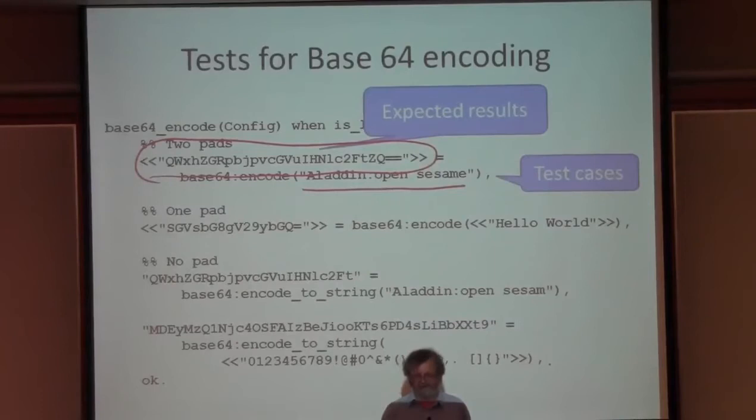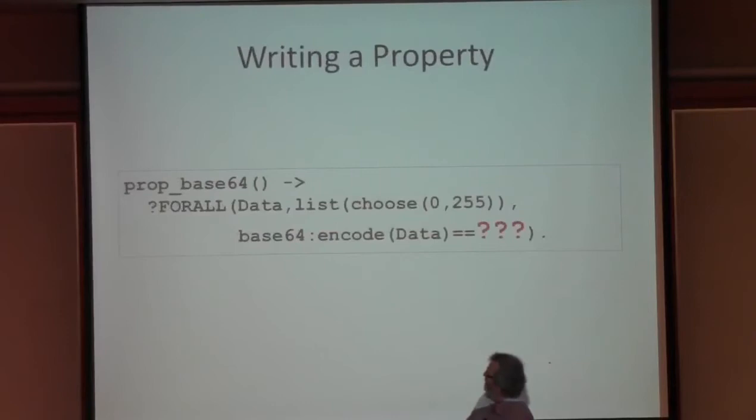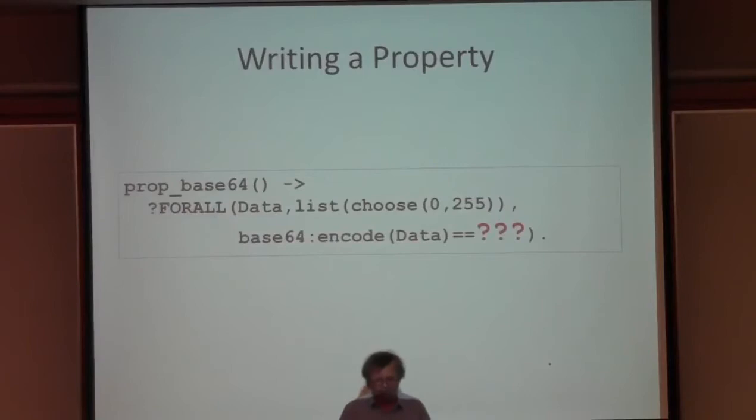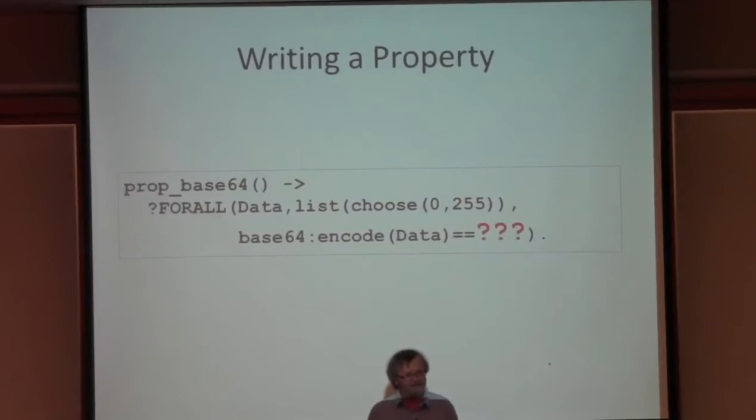Here you can see four test cases: each one encodes a fixed string and checks that the result equals an expected binary string - showing the characters that the base64 encoding produces. Those are the tests run when the Erlang distribution is built. Look at the form of these things: we call a function under test on a fixed input and compare the answer against an expected result. This is the form of the vast majority of test cases in industry.